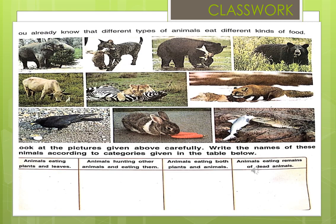Children, look at the pictures given above carefully. Write the names of these animals according to the categories given in the table below. Mention animals eating plants and leaves, animals hunting other animals and eating them, animals eating both plants and animals, and animals eating remains of dead animals. This is your classwork.